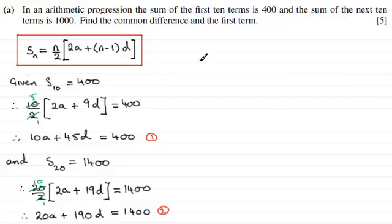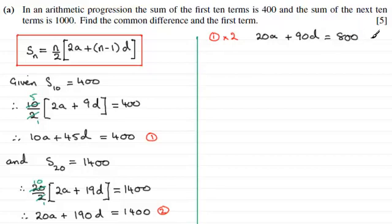Now there's various ways of solving simultaneous equations, and I'll leave it up to you to possibly do it a different way to what I'm going to do. But I'm going to eliminate the A terms here. I'm going to take equation 1 and double it. So we'll take equation 1 and double it, times it by 2. And that will give me 20A plus 90D if I double the 45. And if I double the 400, that's going to equal 800. So that's a new equation, so I'll call that equation 3.